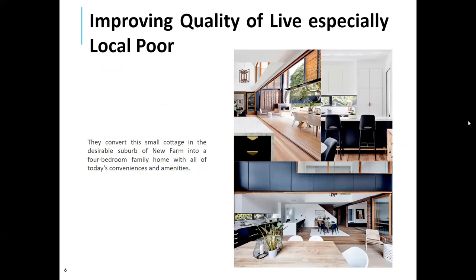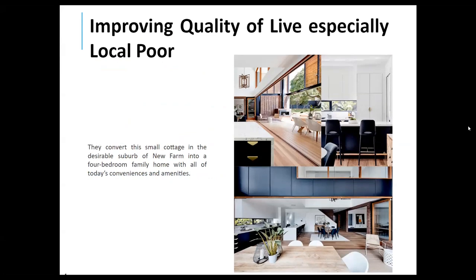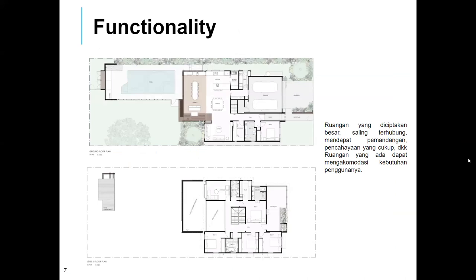Untuk aspek H, adaptivitas masa depan: kami menemukan adanya electric car charging station yang terletak pada double garage yang bisa menunjang penggunaan mobil listrik di perumahan ini. Kemudian penjelasan dari aspek ekonomi yang pertama, yaitu meningkatkan kualitas hidup warga lokal terutama masyarakat yang berpenghasilan rendah: mereka mau mengubah small cottage menjadi rumah keluarga yang nyaman dengan beberapa fasilitas. Untuk fungsionalitas, ruang-ruang yang diciptakan itu cukup besar, saling terhubung, dan mendapat view, pemandangan, dan cahaya yang cukup, sehingga dapat mengakomodasi kebutuhan penggunanya.